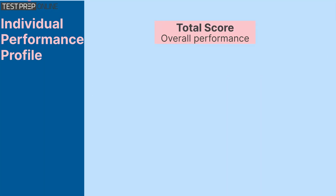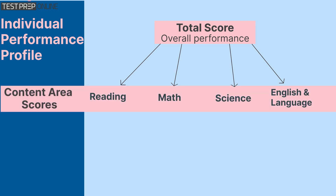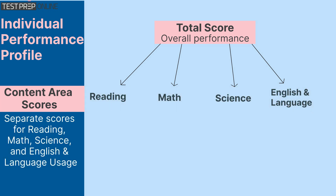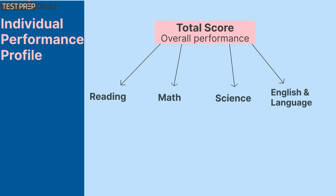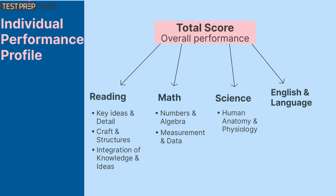INDIVIDUAL PERFORMANCE PROFILE. The total score means the overall performance, which consists of the content area scores — the scores for the test's four sections. Each content area score is assembled from the subcontent area scores, which are detailed scores within each content area.